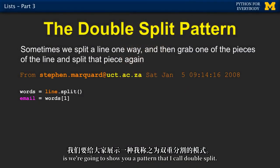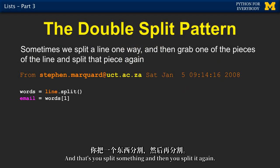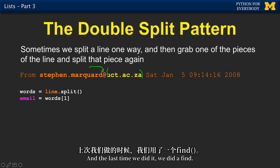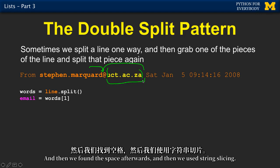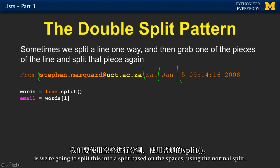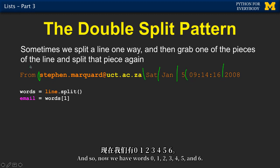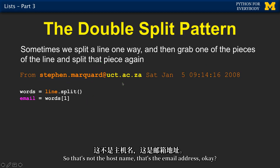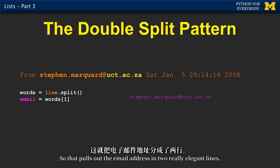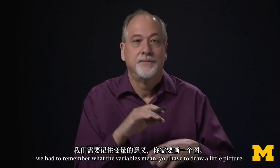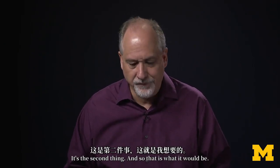Now we're going to look at a pattern called double split - where you split something and then split it again. We want to pull out an email address. The first thing we do is split on spaces using the normal split, giving us word zero, one, two, three, four, five, and six. We grab word sub one, and that's the email address - not the host name. That pulls out the email address in really elegant lines, much simpler than the find strategy where you had to remember what variables mean.